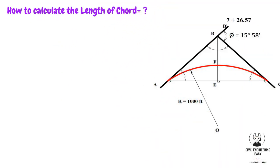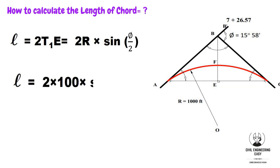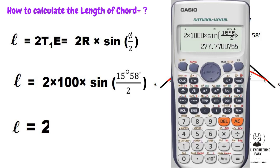After finding the chainages of the tangent points, we find the length of chord using the relation: Length of chord = 2 × R × sin(Δ/2). Putting in the values — radius 1000 feet, deflection angle 15 degrees 58 minutes — by calculation we get the length of chord equal to 277.75 feet.